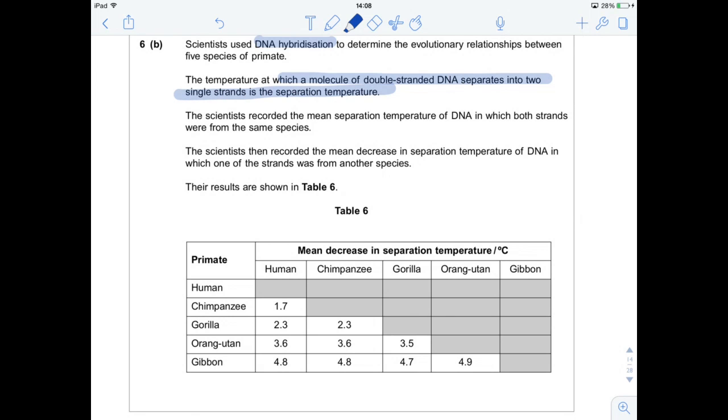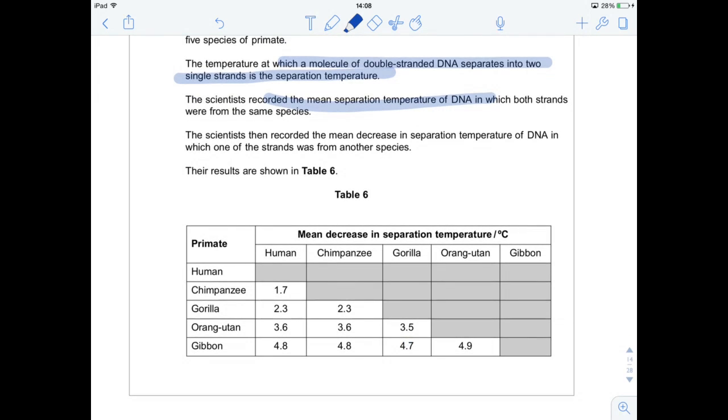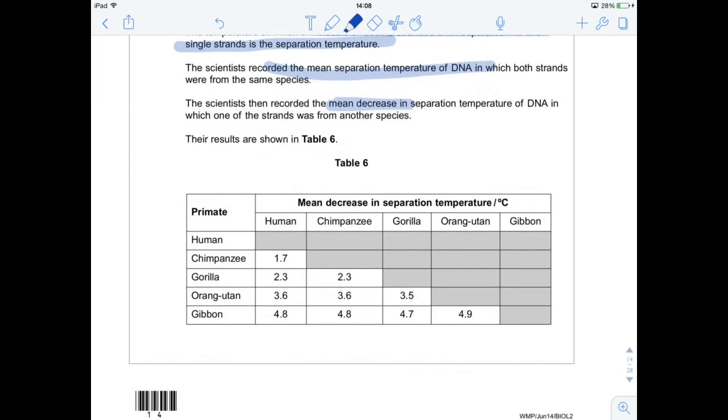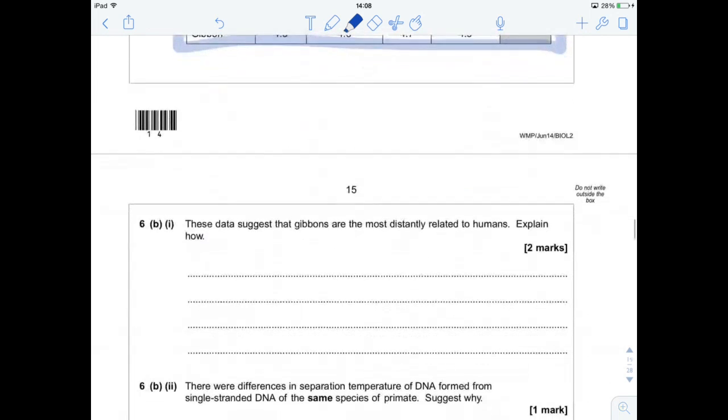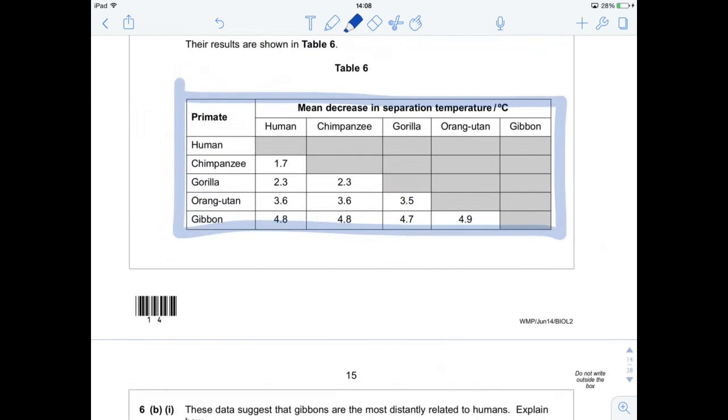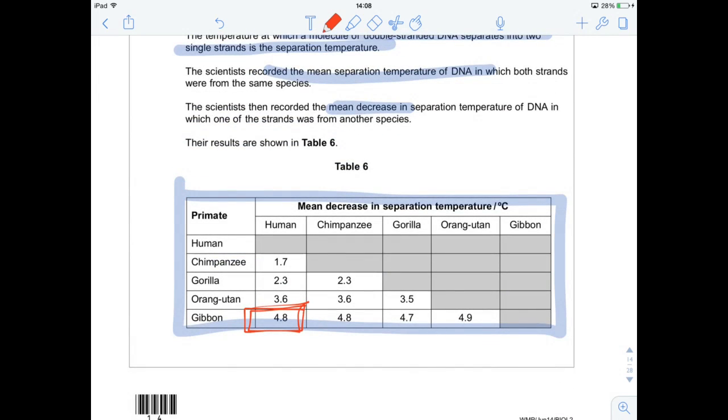They recorded the mean separation temperature of DNA in which both strands were from the same species. And then they recorded the mean decrease in separation temperature. The bigger the decrease, the further they are apart. Let's have a little look-see. We've got some results in this big, scary-looking table right here. And it says, these data suggest that gibbons are the most distantly related to humans. Explain how. So, humans and gibbons is right here. Yeah, they've got the largest decrease in temperature.